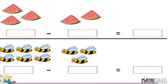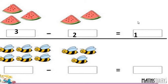How many watermelons are there? There are 3 slices. We have to cross out 2 slices from these 3. After crossing out 2, see how many slices are remaining — it is 1. So we write 1 in the given box.